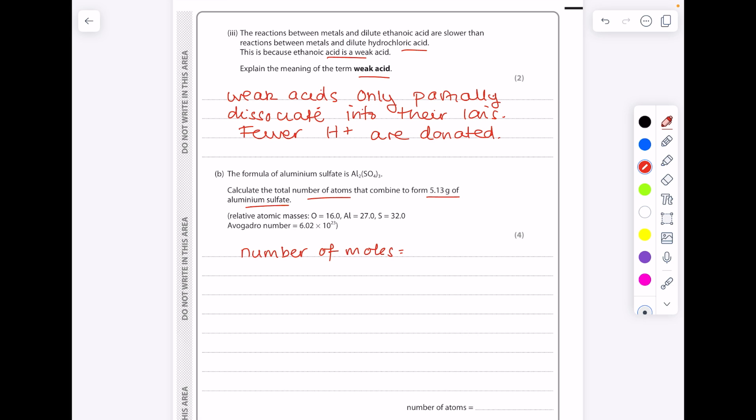So that will tell us a quantity. So use your formula triangle which is mass, MR, number of moles. So we can see that number of moles is mass divided by MR. Even if you're not sure what to do, just start by doing a simple calculation that you're more used to.